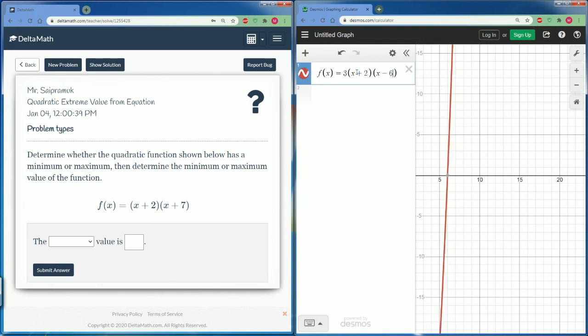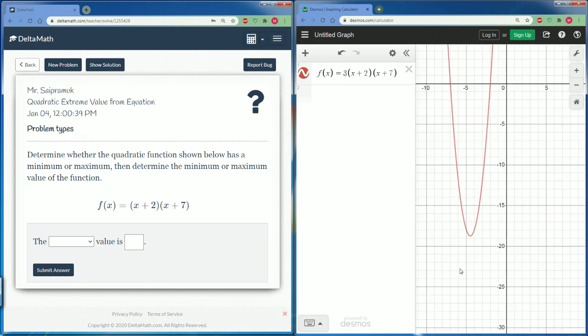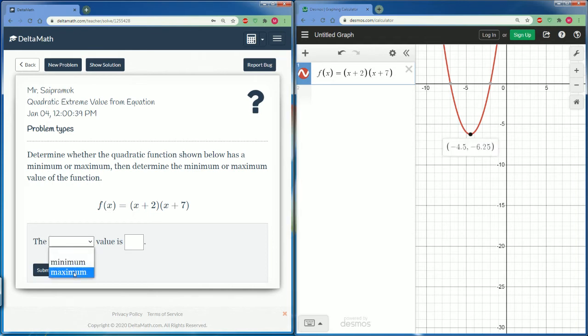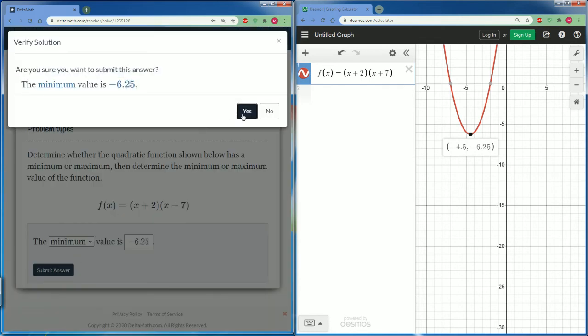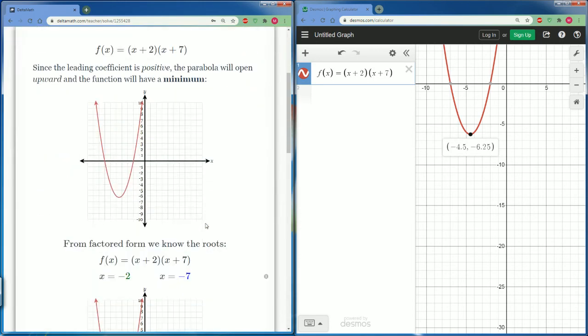Plus 2, plus 7, and you should see, yep, this one has a minimum, and it is right here. Oop, there's no 3 in front. All right, so it is right here. It is a minimum because do you see how it is the smallest value here, and it is at negative 6.25. Let's submit, and there you go. You are correct.